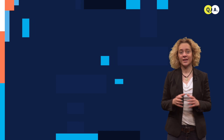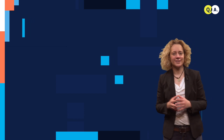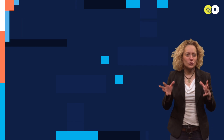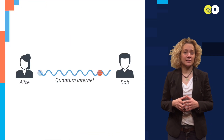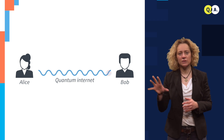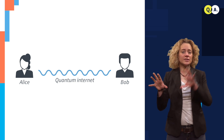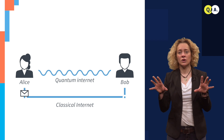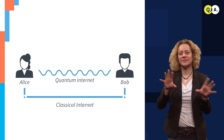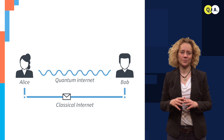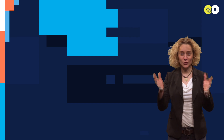When realizing a quantum internet, just like on the classical internet, we will also need some control traffic. Basically, next to the quantum communication, we will also use classical communication, for example to direct the qubits to the right destination in the network. This is what a quantum internet looks like.